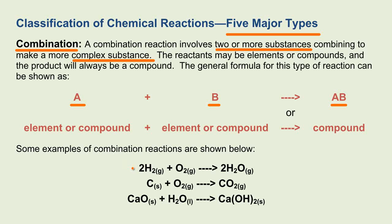Here are three examples. Two diatomic molecules of hydrogen combining with a diatomic molecule of oxygen — the G represents in the gas form — to form two molecules of water, which would be vapor.